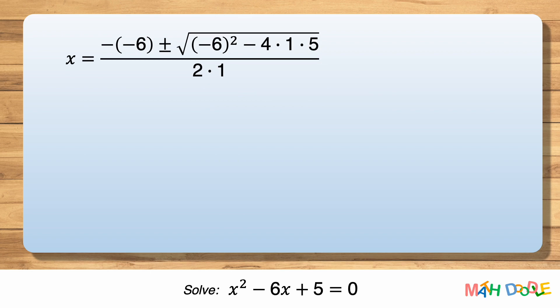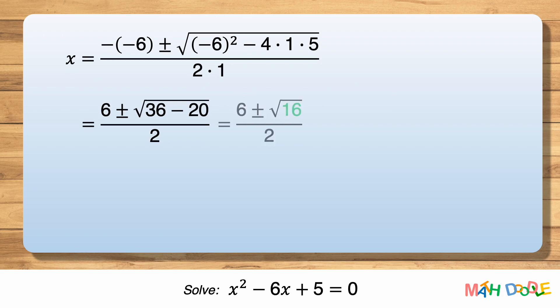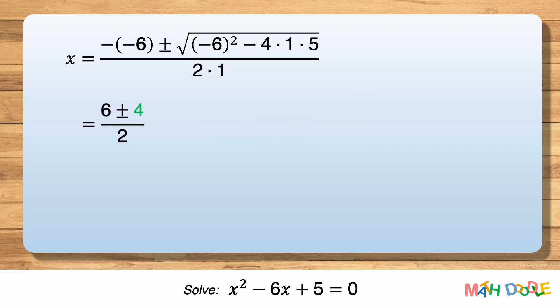Then, let's simplify the equation and solve for X. And let's simplify the radical. 36 minus 20 is 16, and the square root of 16 is 4. This gives us two equations.